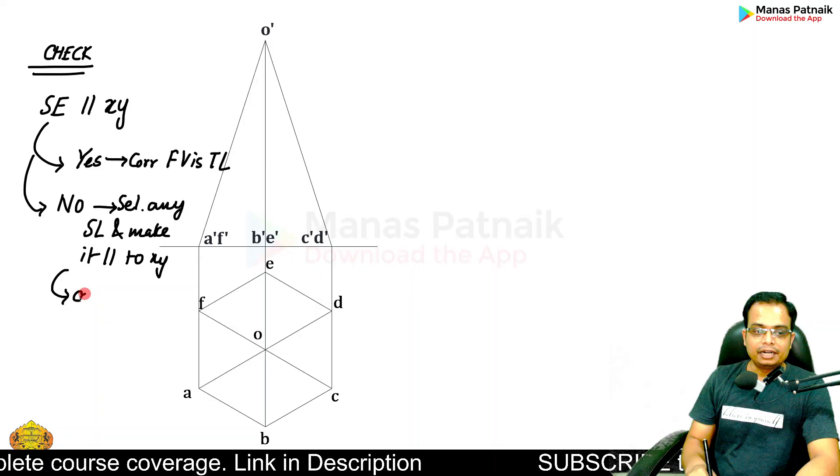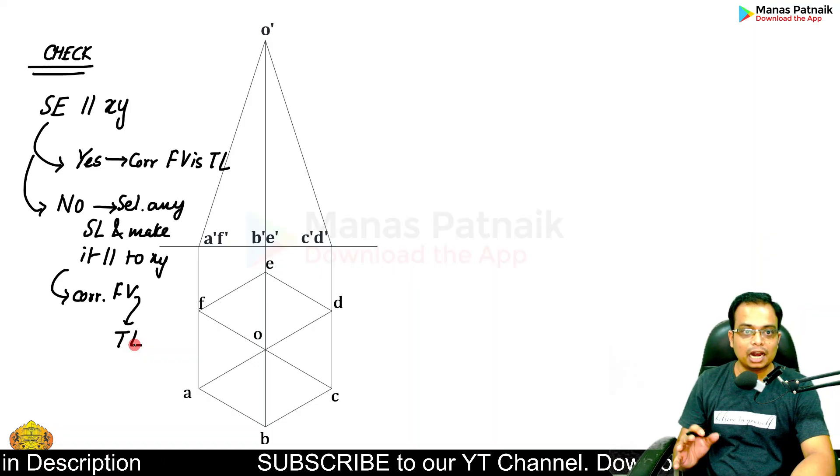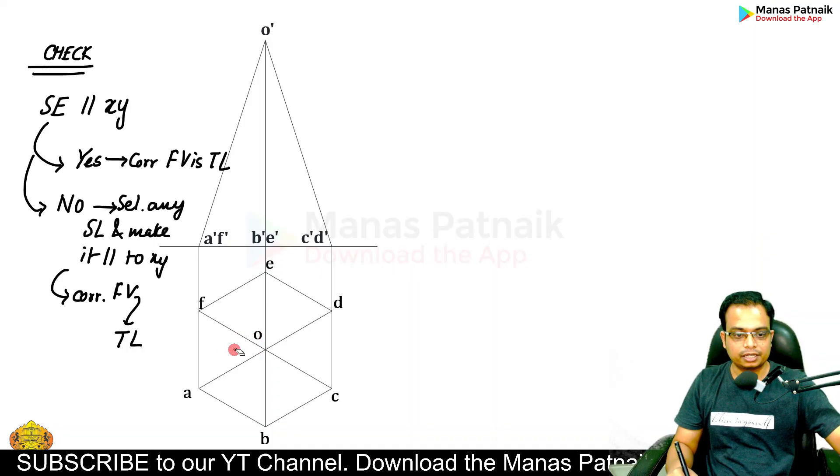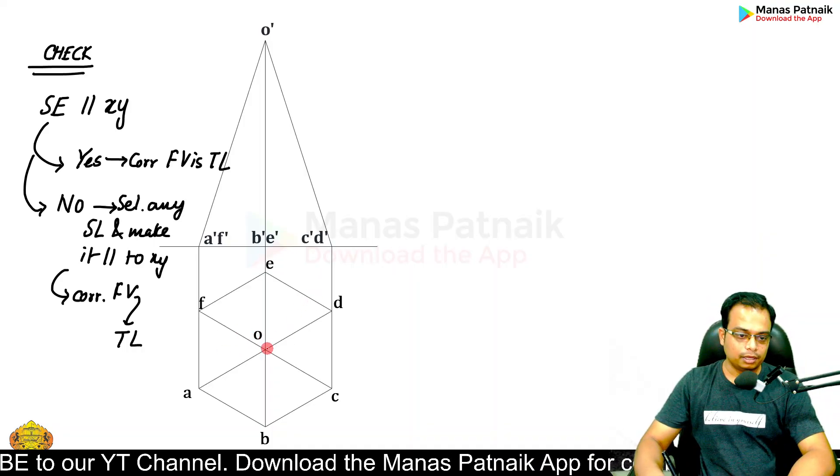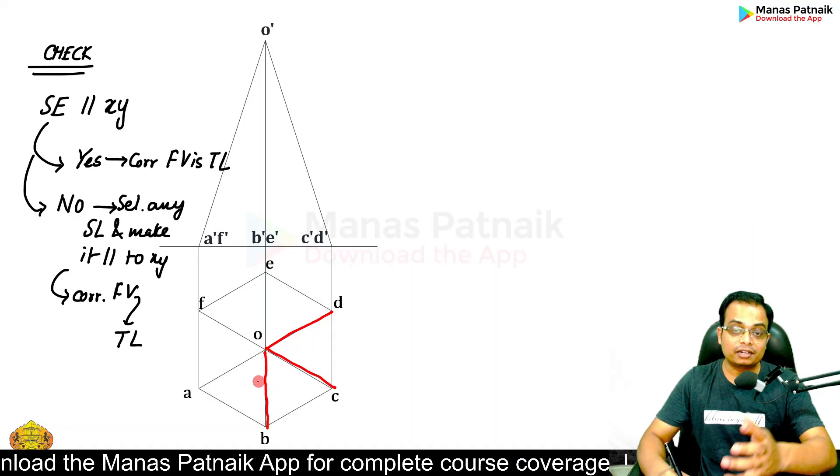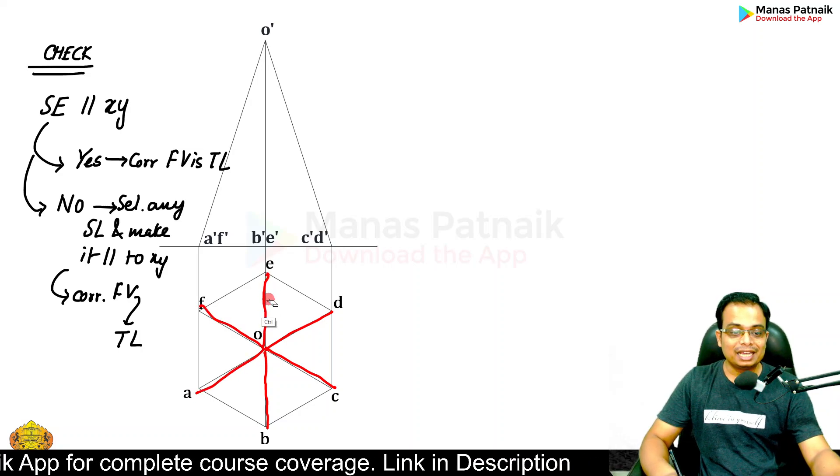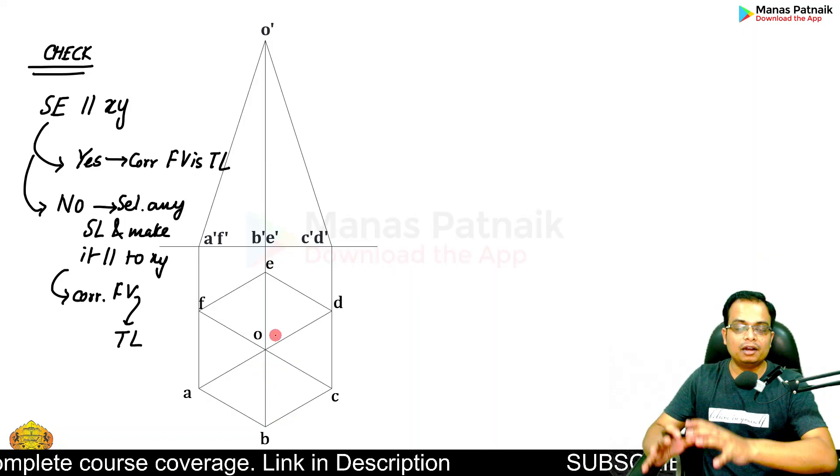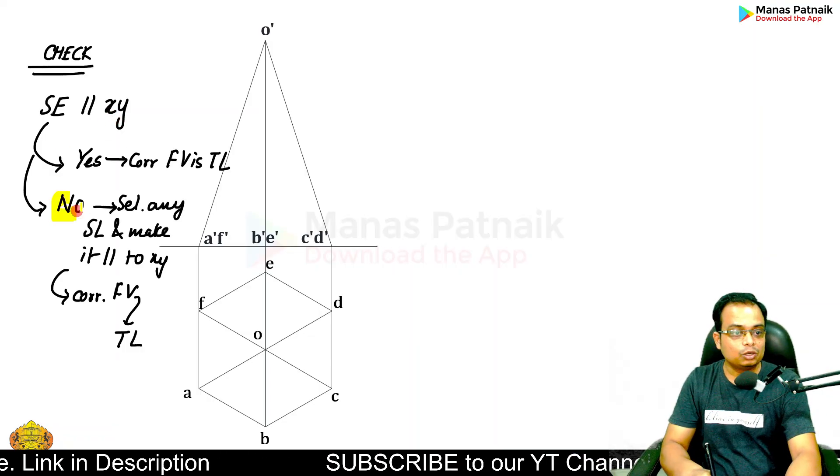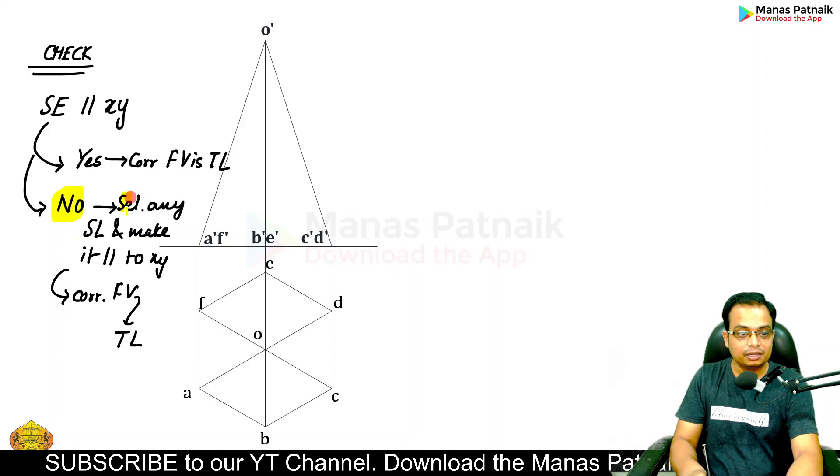If no, then select any slant edge and make it parallel to XY, and then its corresponding front view is going to be your true length. Let me explain. Is OD parallel to XY? No. Is OC parallel? No. Is OB parallel? No - in fact this is perpendicular. What about OA? No. OF? No. OE? No. So there is no slant edge in the top view which is parallel to the XY line.